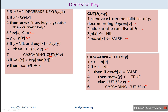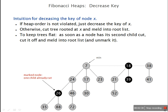After the recursive cascade cut, we need to update the min pointer. In lines 8 and 9 we update the min pointer. This is the procedure for Fibonacci heap decrease-key. Let's understand it with an example.